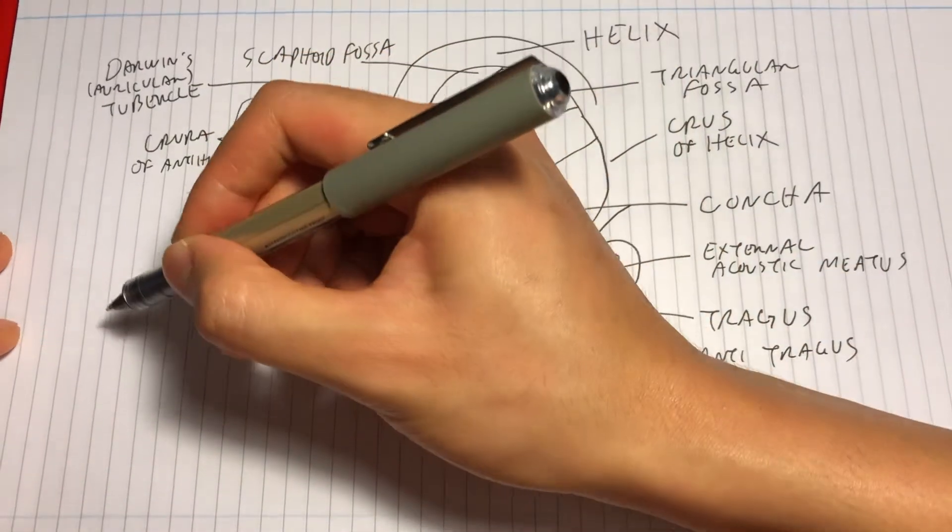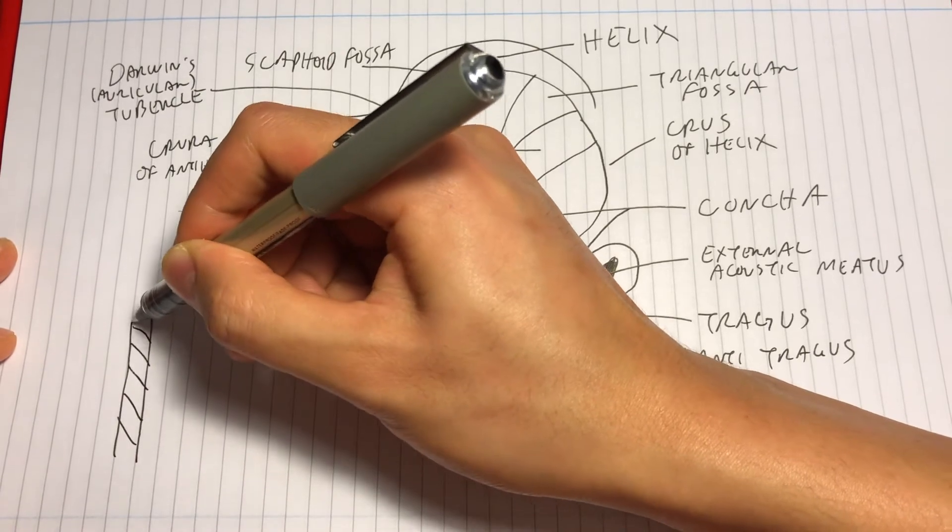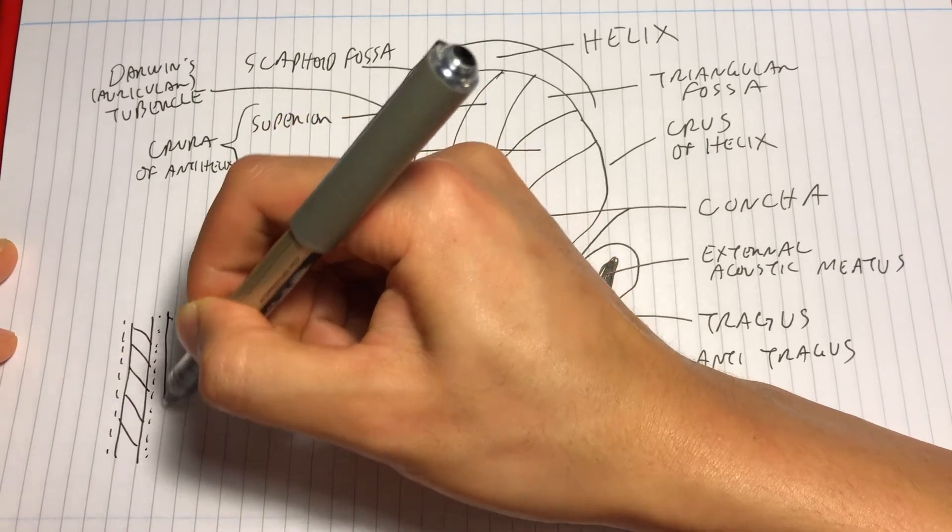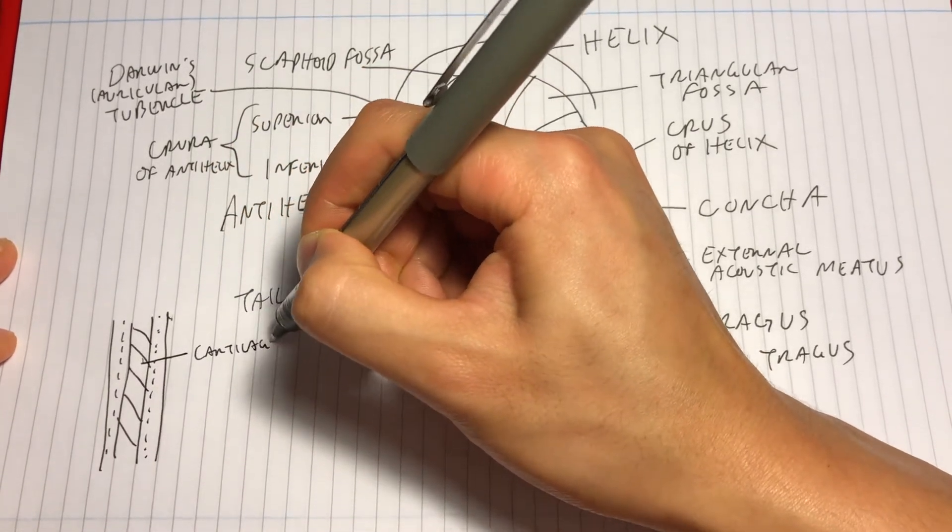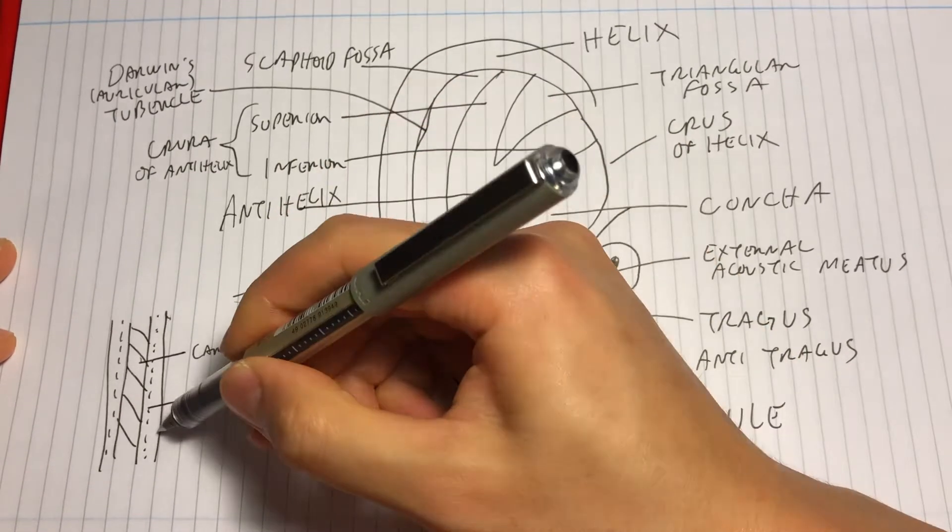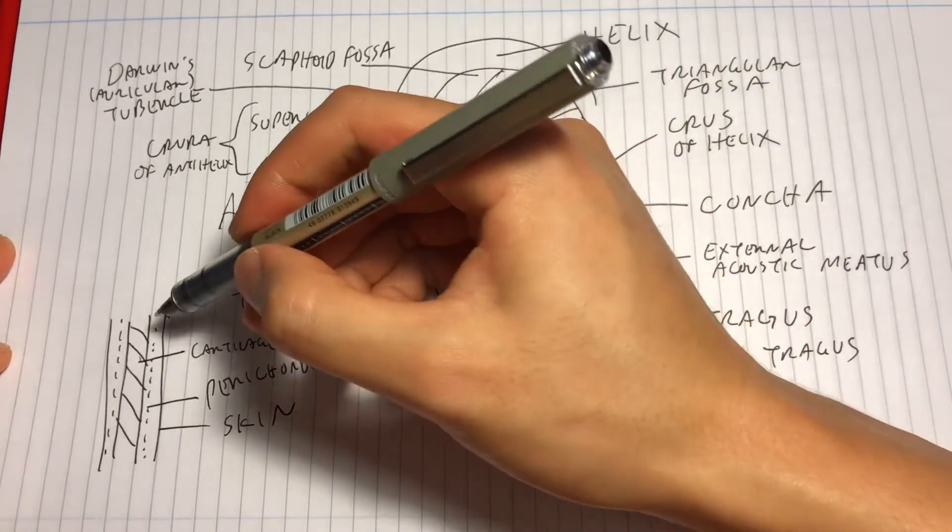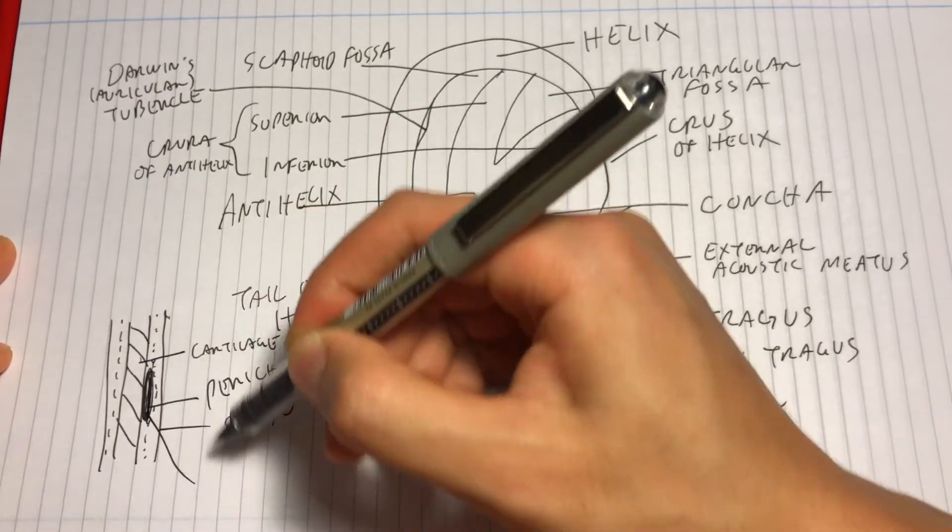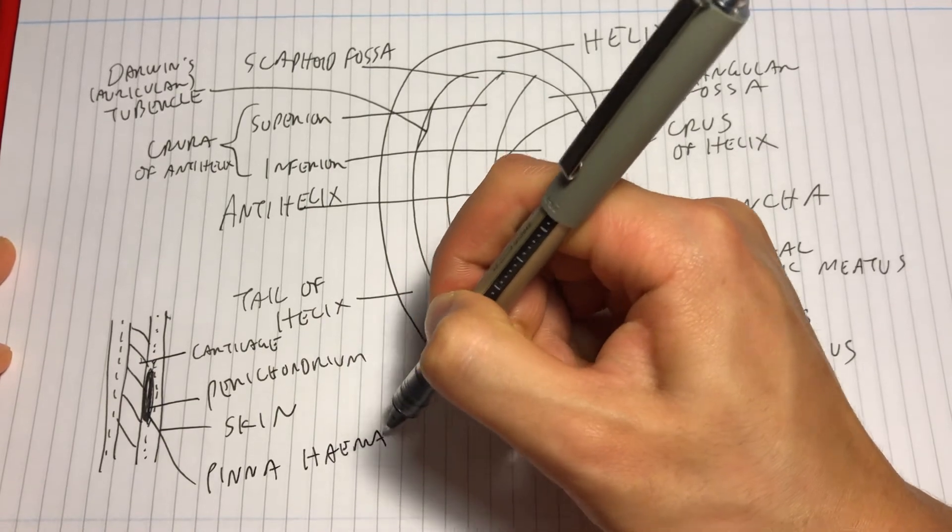The structure of the pinna comes from cartilage, which is surrounded by perichondrium, which contains the blood vessels that keep the cartilage alive. Then outside of this is the skin. This is important because if there is a collection of blood deep to the perichondrium, it can starve the cartilage of its blood supply and lead to necrosis and a deformity known as cauliflower ear.